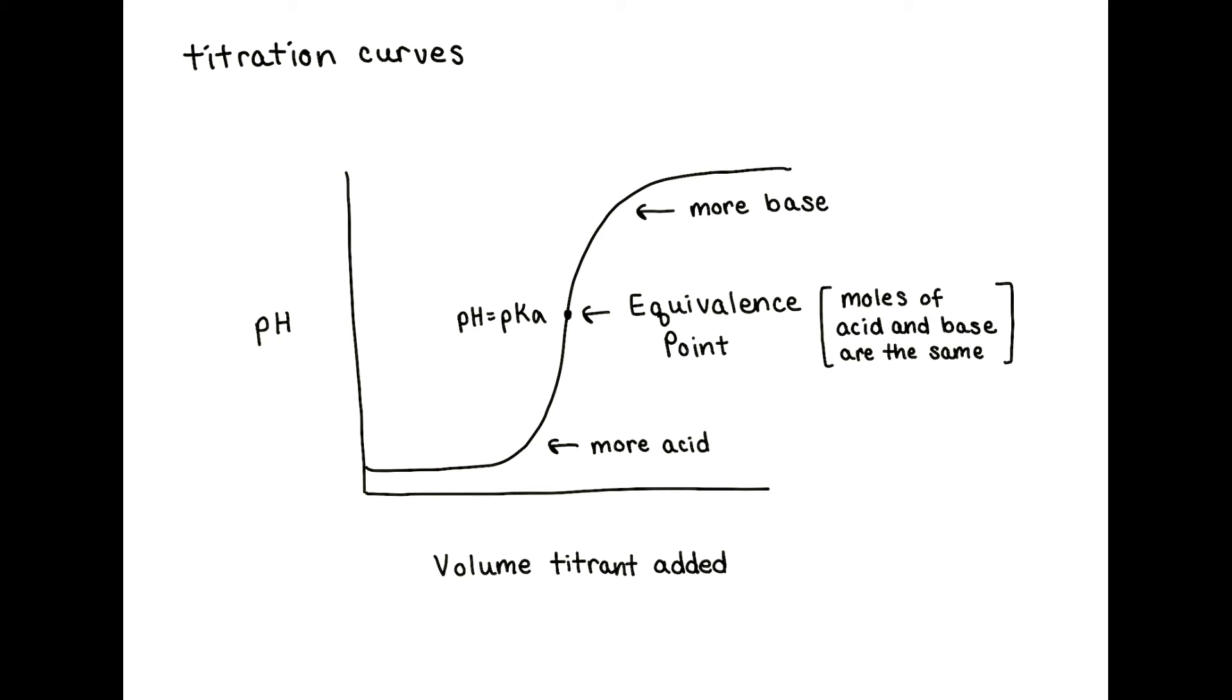If we continue to add base past the equivalence point, then our solution will become more and more basic. Initially, you can see that the pH is not changing drastically. This is because the solution is acting as a buffer. At the equivalence point, we see a rapid change in pH. This is because the buffering capacity has been completely used up. If we add more base after we've reached the equivalence point, then there will be more hydroxide in solution which will continue to increase the pH.